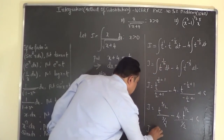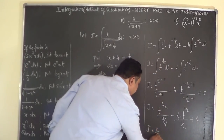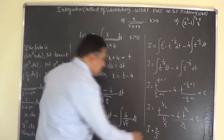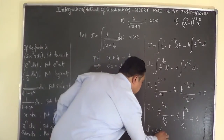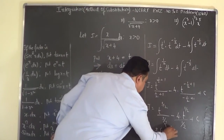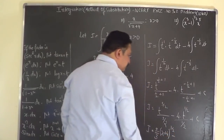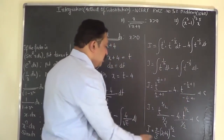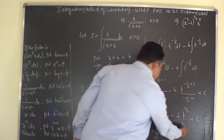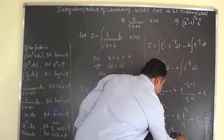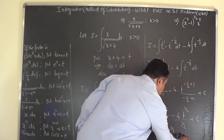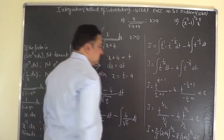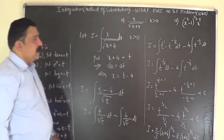So I equals 2/3 times t to the power of 3/2, where t is x plus 4, minus 8 times (x plus 4) to the power of half, plus C. That is the final answer for problem 11.